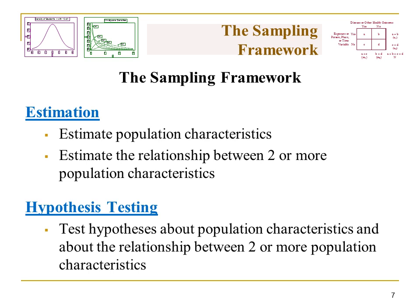That said, we do need the statistical methods, and the sampling framework is really the basis for a lot of it. The sampling framework includes two different aspects. One is estimation, where we're estimating population characteristics such as demographics, disease incidence, and indicators of access to care. We can also estimate associations between two or more population characteristics. With hypothesis testing, we can actually test hypotheses about those population characteristics and the relationships between them.